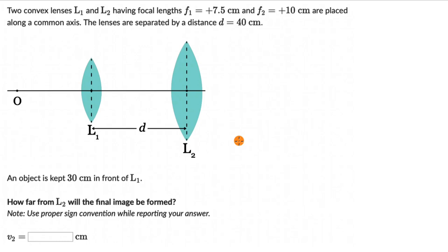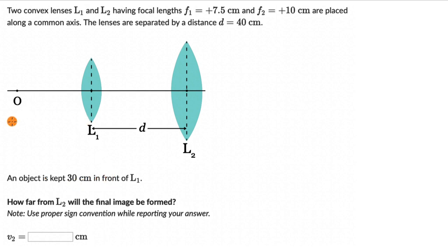Let's solve a couple of questions on image formed by multiple lenses. For the first one, we have two convex lenses L1 and L2 having focal lengths F1 which is plus 7.5 and F2 plus 10, placed along a common axis. These lenses are separated by a distance d of 40 cm, and an object O is kept 30 cm in front of L1. The question is to figure out how far from L2 the final image will be formed, using the proper sign convention.